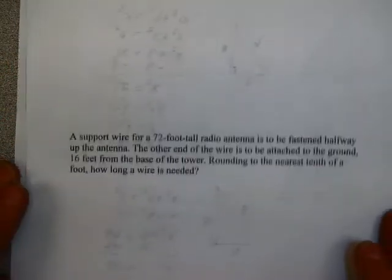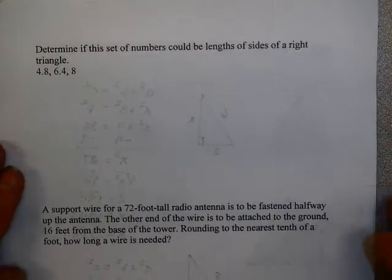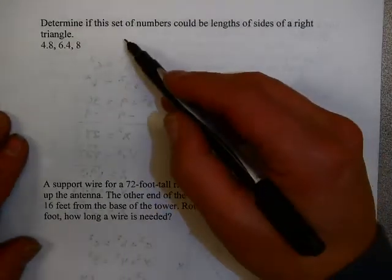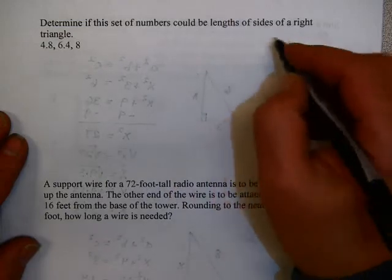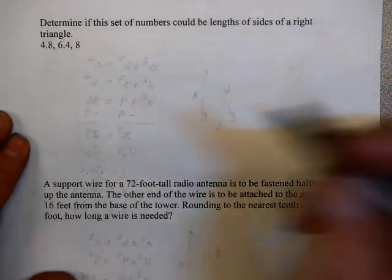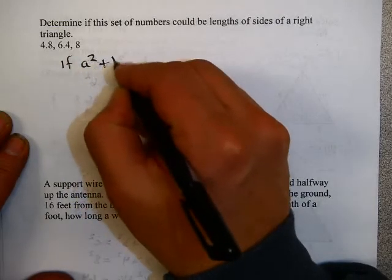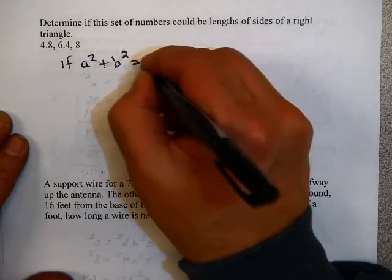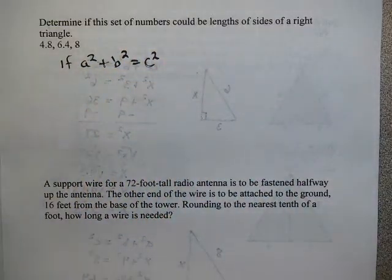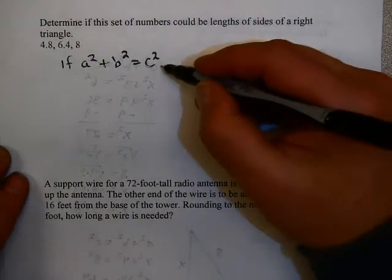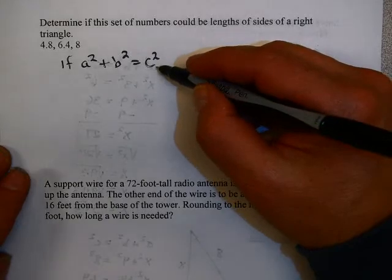Okay, let's try another problem with perfect square. This one. Determine if the set of numbers could be links to the side of a right triangle. Remember that if a squared plus b squared equals c squared, then you've got a right triangle. The question is, what is a and b and c? Remember, c has to be the longest side.